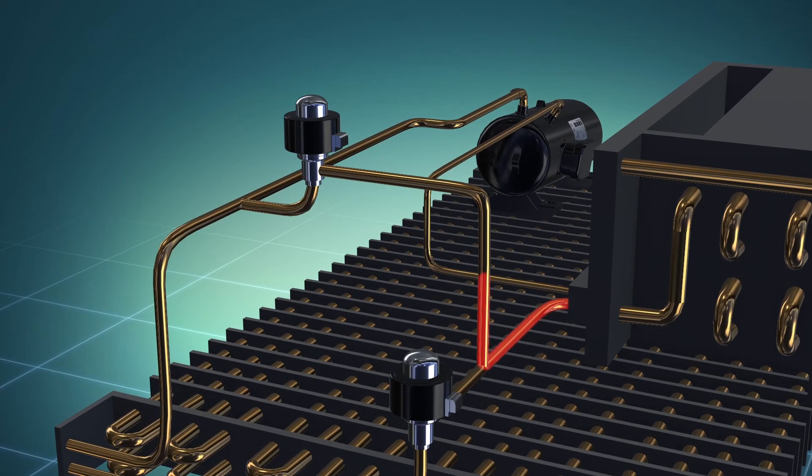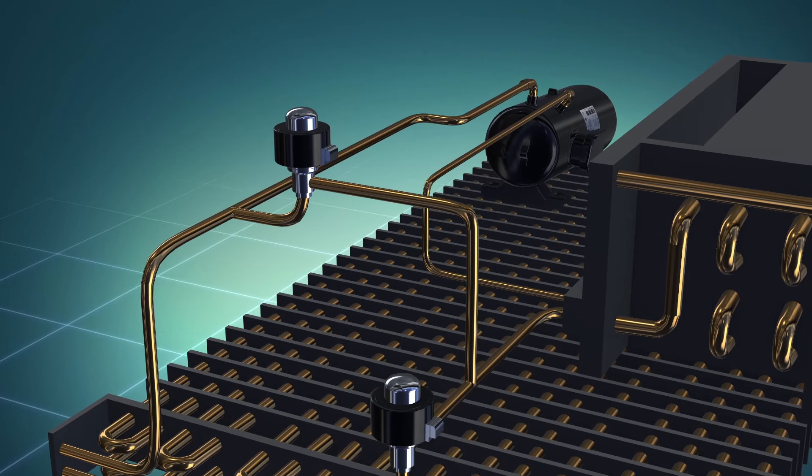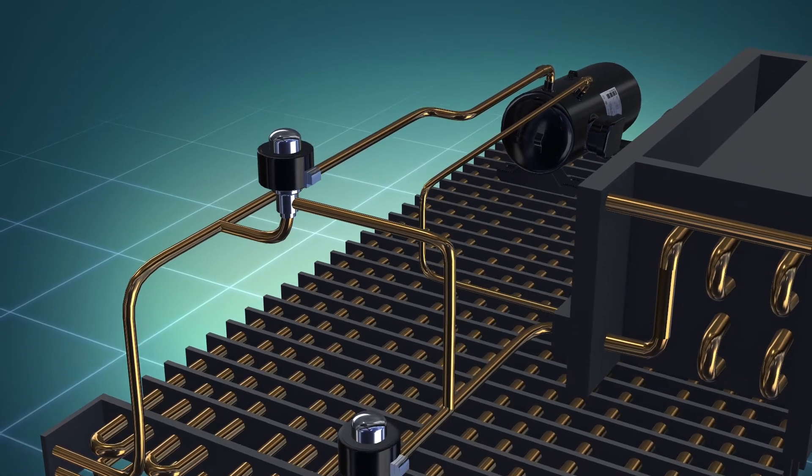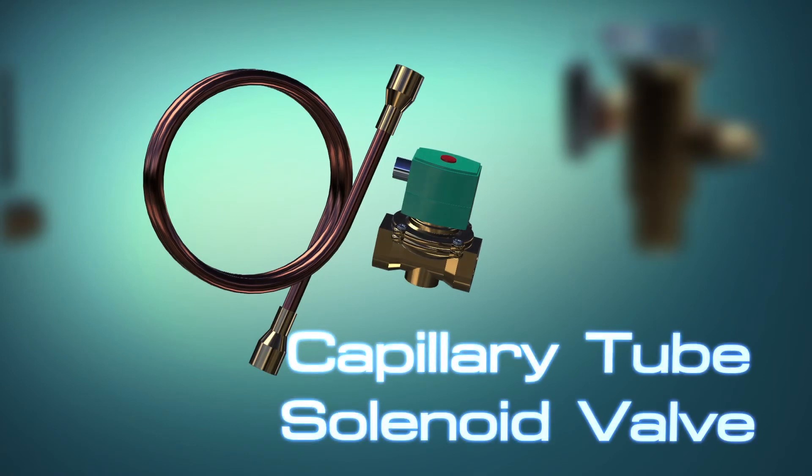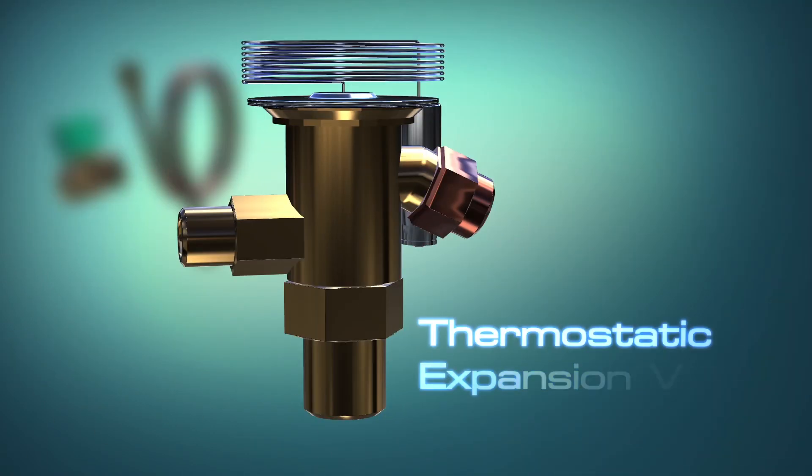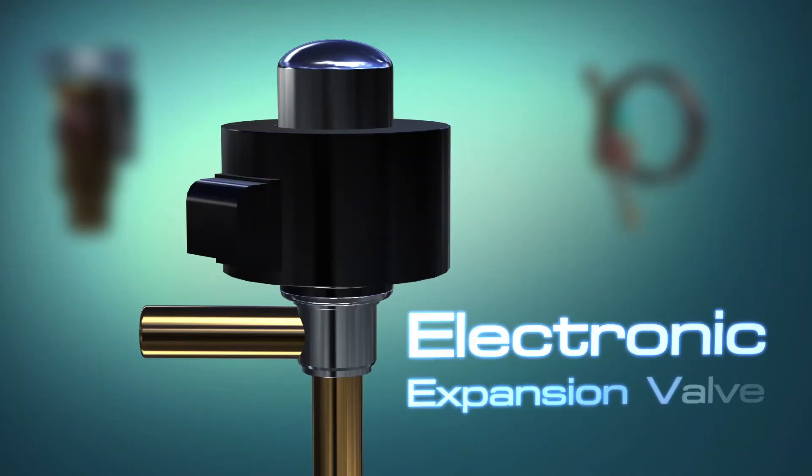The additional device connects from the condenser to expansion device and then to the compressor's suction pipe. There are three ways to connect the expansion device: by using solenoid valve and capillary tube, thermostatic expansion valve, or electronic expansion valve.